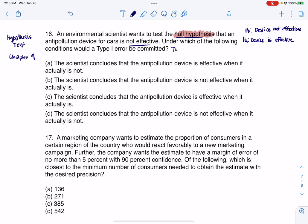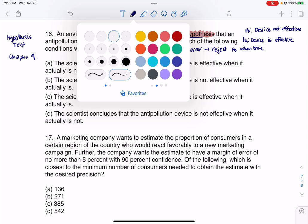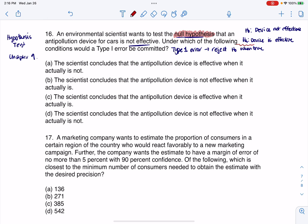So type 1 error. That's when you reject H0, even though it was correct. When true. Let me put a little dividing, a little separating squiggle there. All right, so type 1 error. You're rejecting the null when it's true.